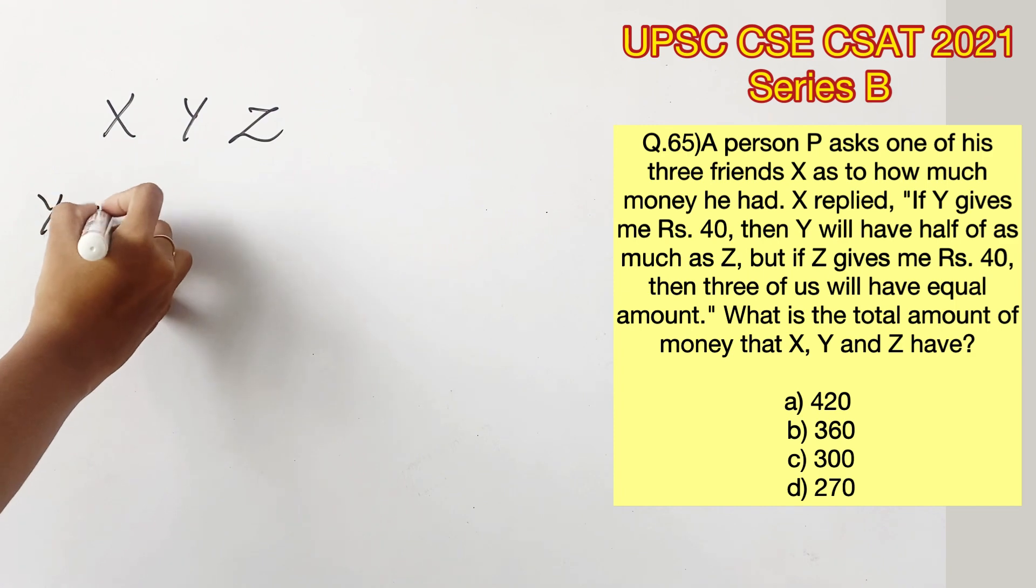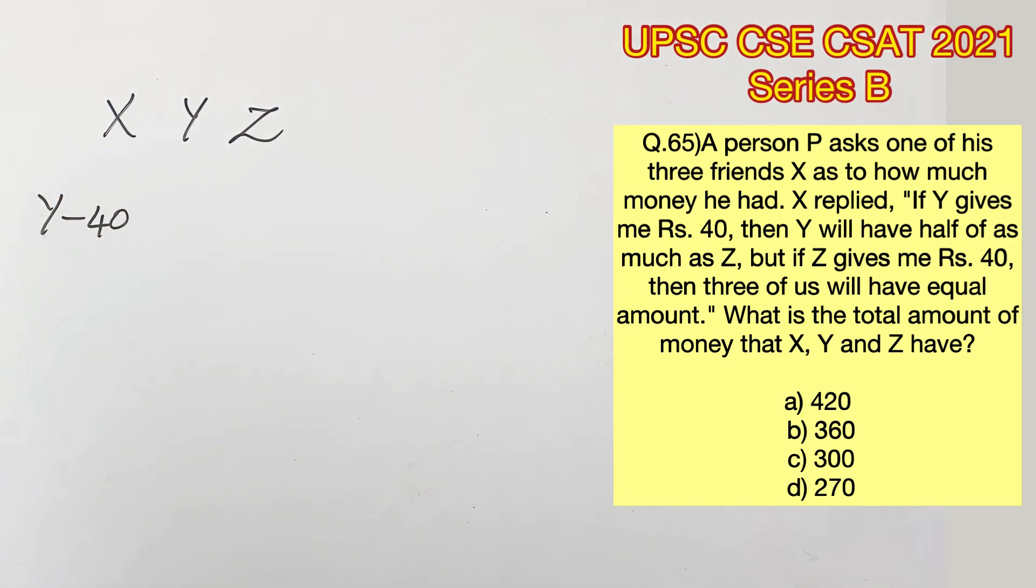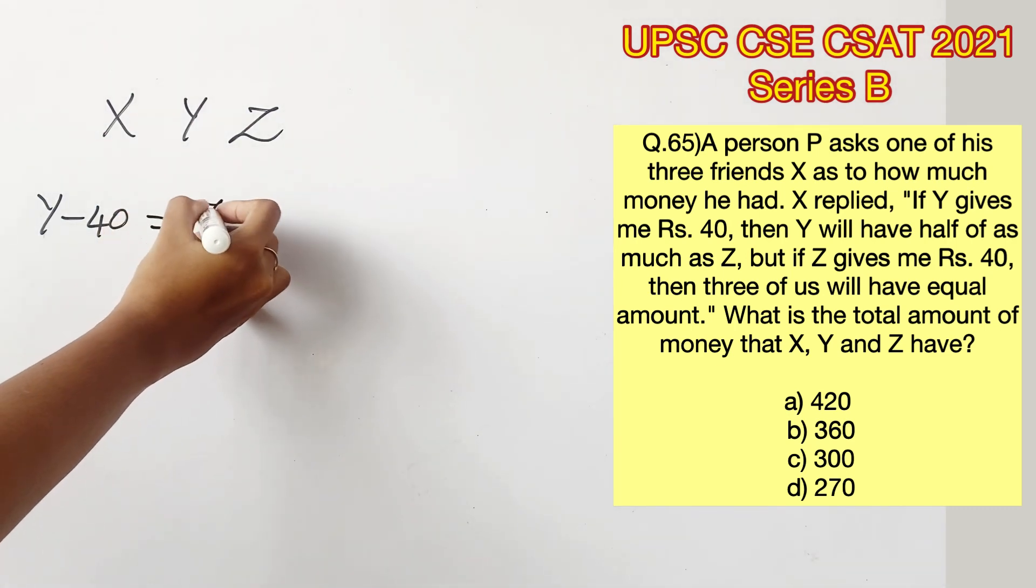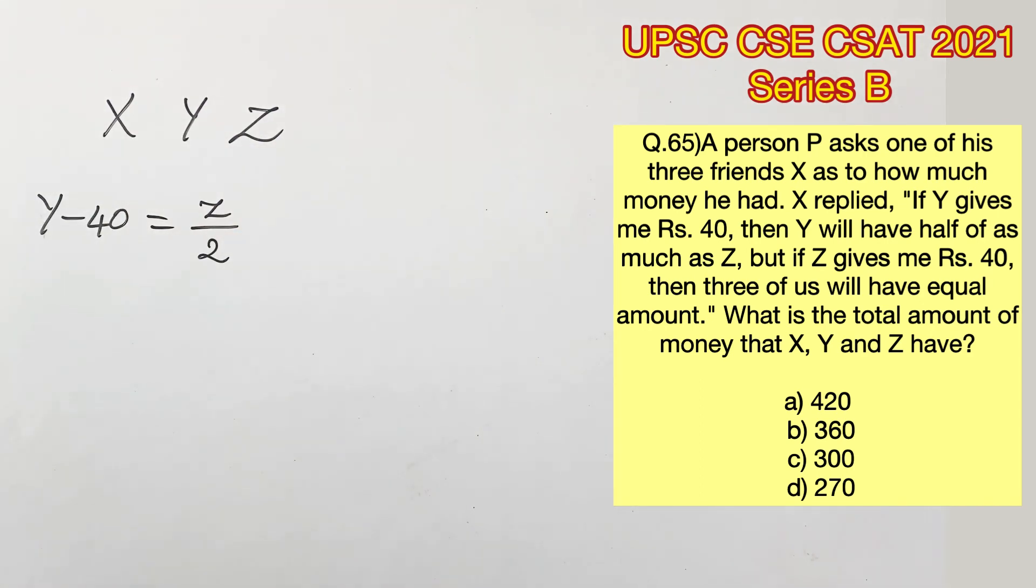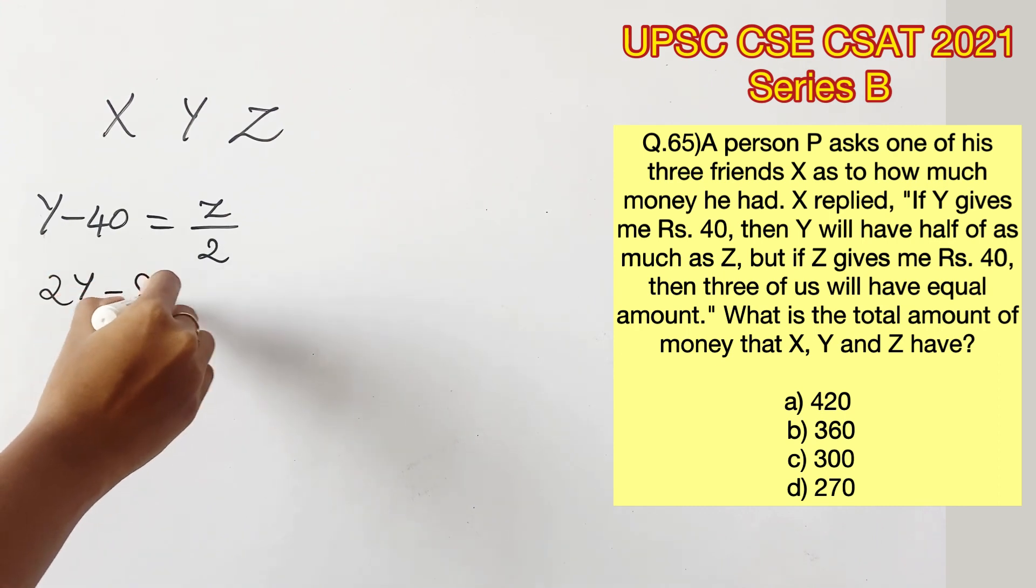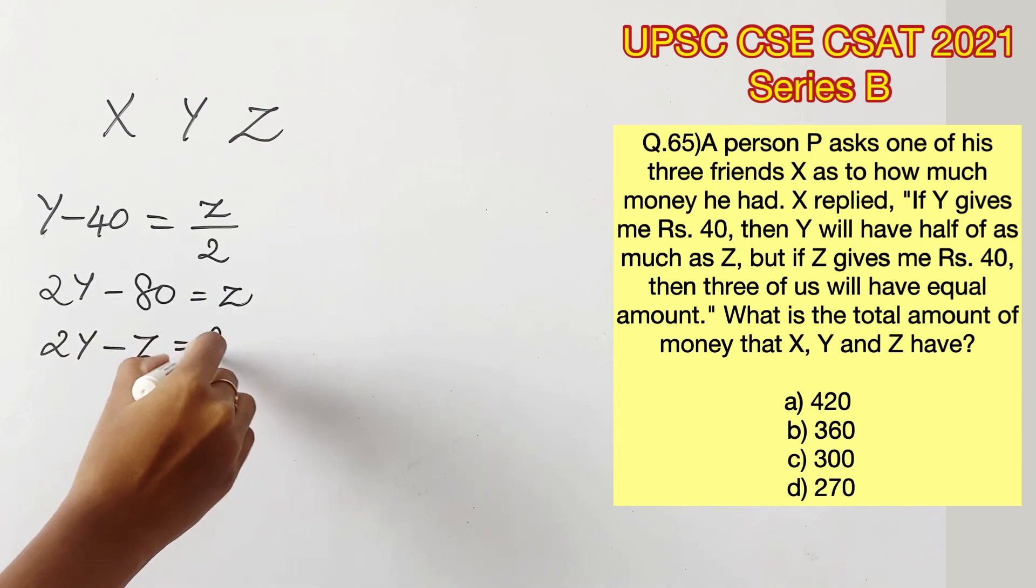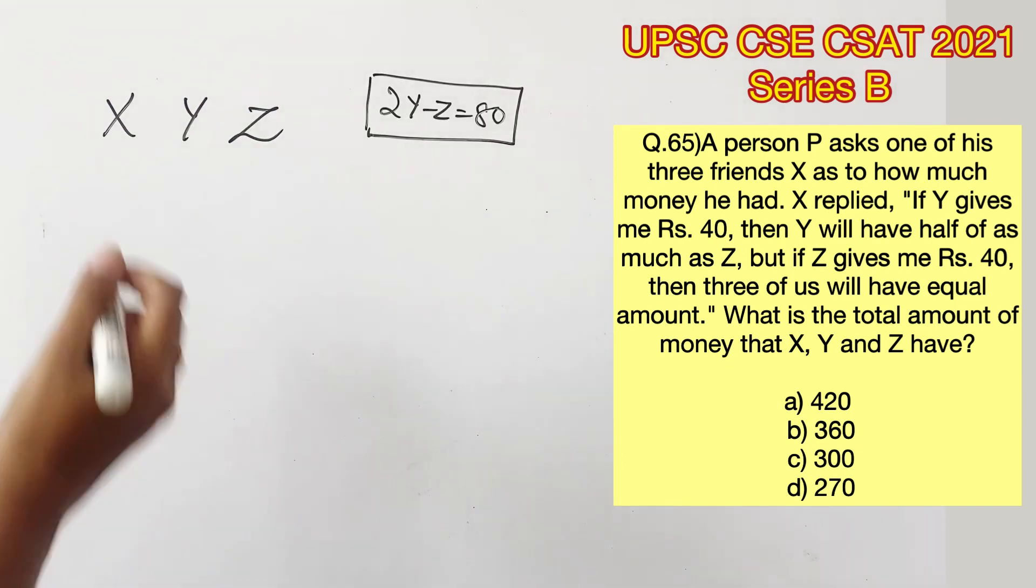The first statement says, if Y gives X rupees 40, then Y will have half of what Z has. So we can represent it as follows. When Y gives away 40 rupees to X, Y will have 40 rupees less now. Now that amount is equal to half of what Z already has. Therefore, Y minus 40 equals Z by 2. 2Y minus 80 is equal to Z and 2Y minus Z equals 80. Now let's consider this as the first equation.